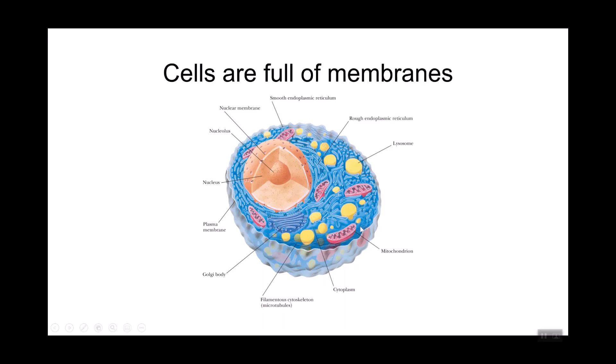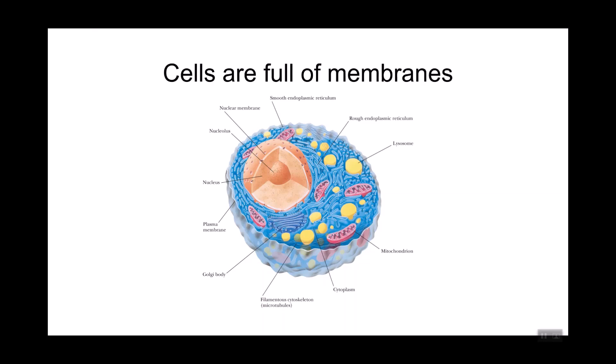Organelles like the mitochondria are super dependent on the structure of their membranes in order to produce energy, while the lysosome is kind of like a garbage can of the cell where it breaks down other molecules — you really don't want any of its components leaking out and destroying the rest of the cell. Acting as a barrier is one of the main functions of biological membranes. The presence of these compartments can also increase cellular efficiency so that processes can happen simultaneously in different parts of the cell.